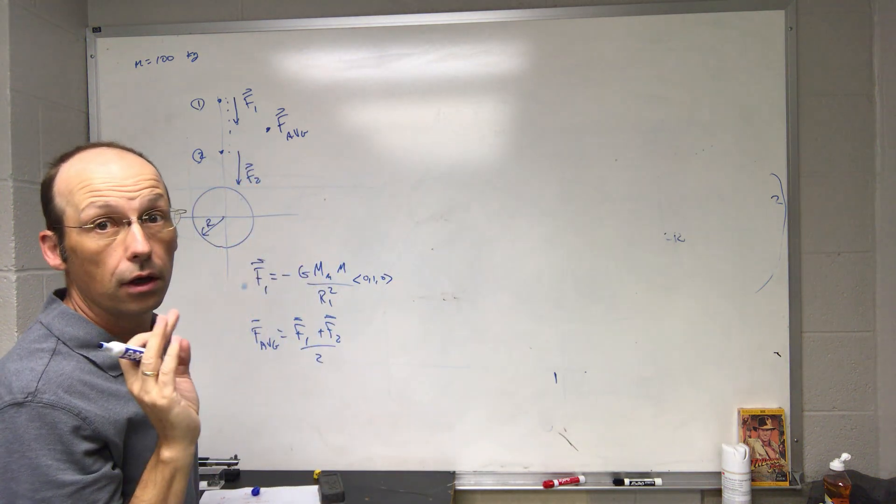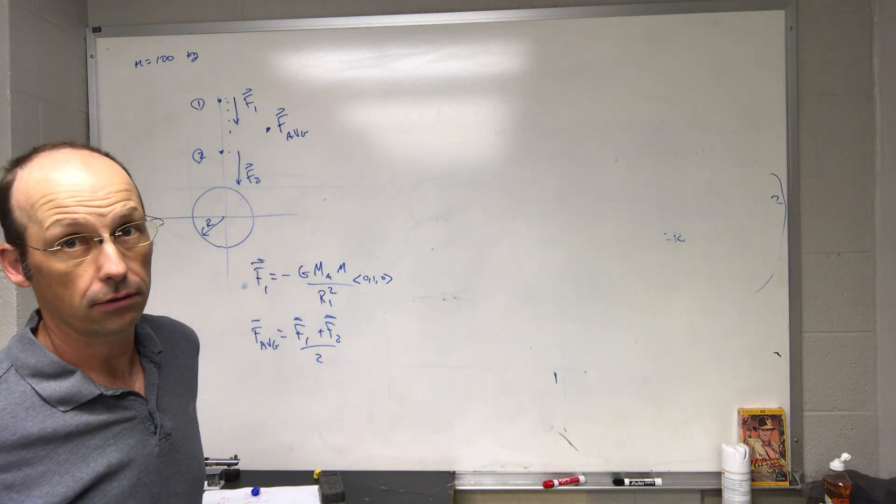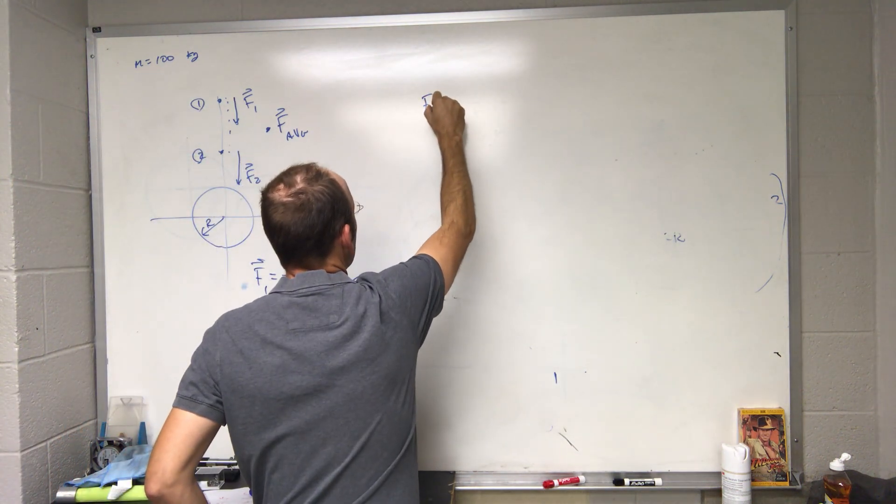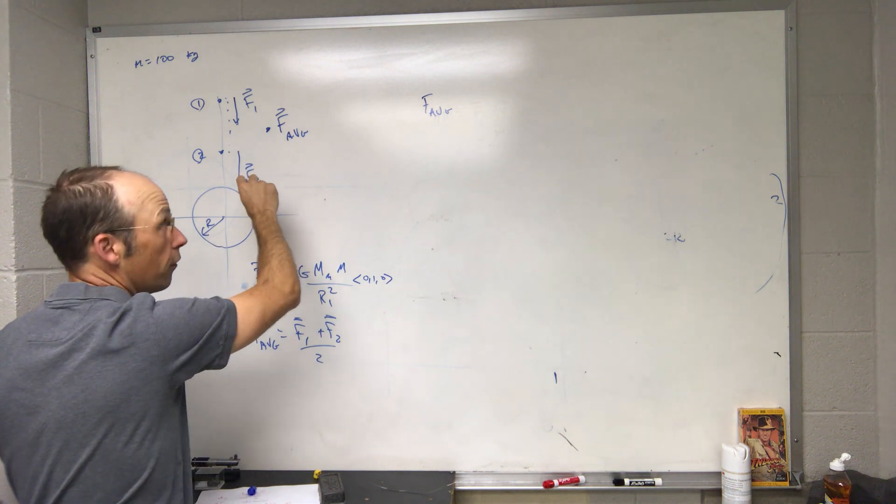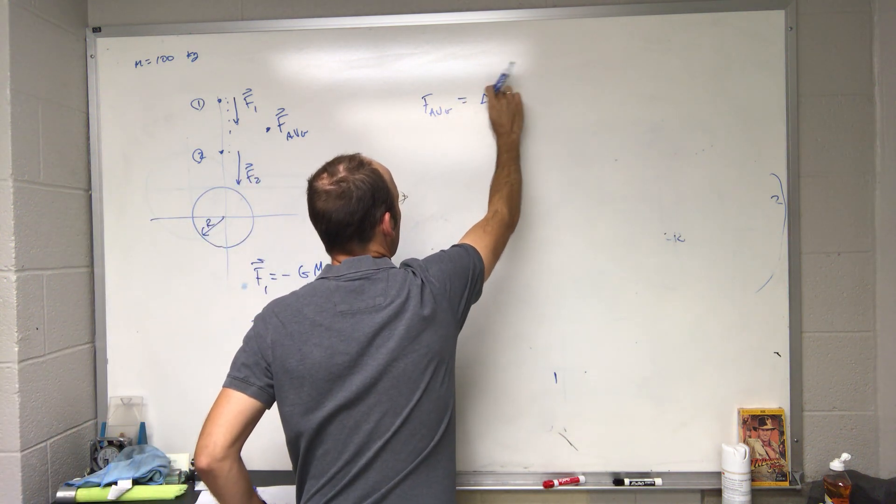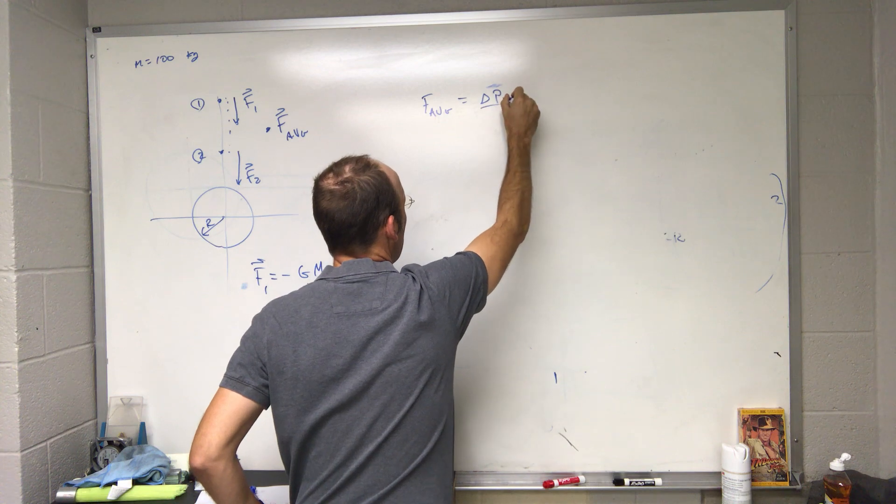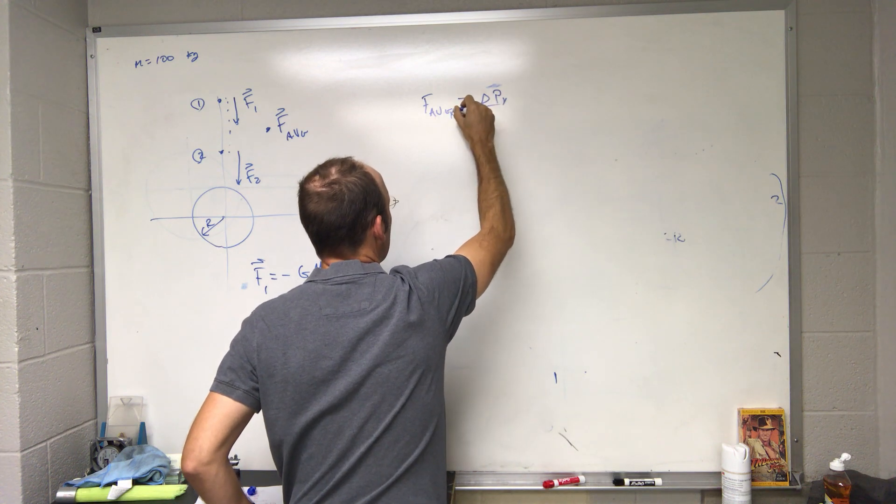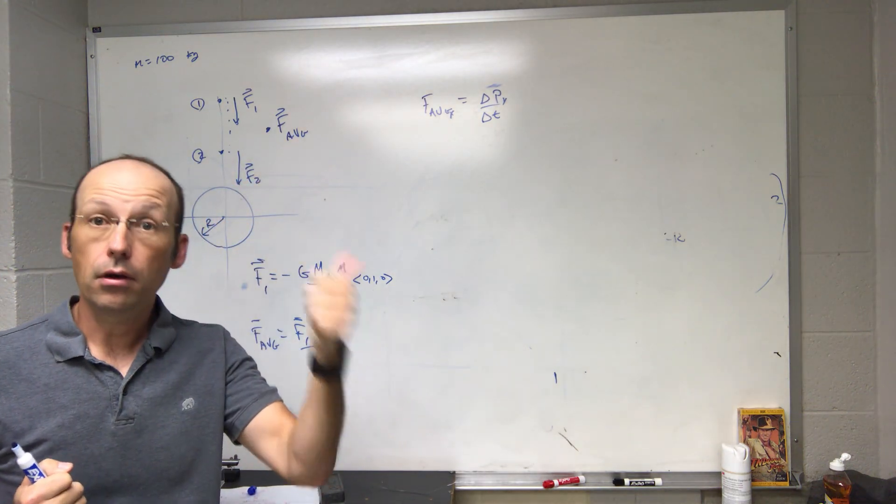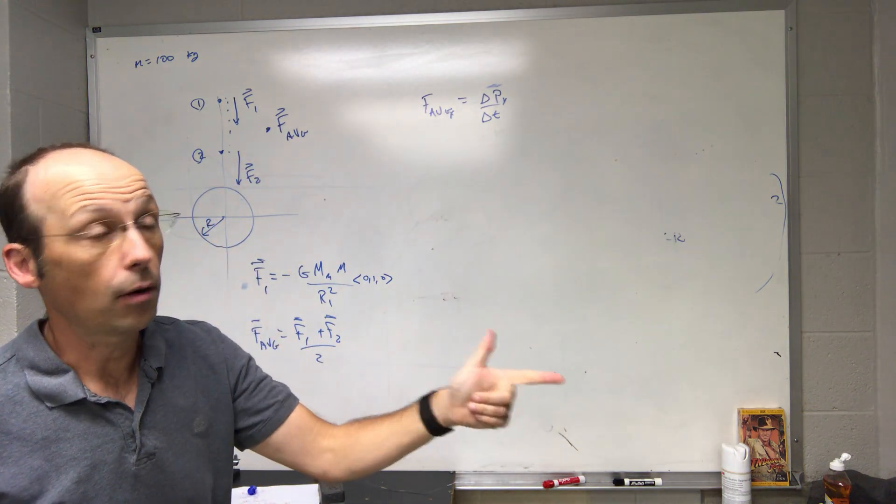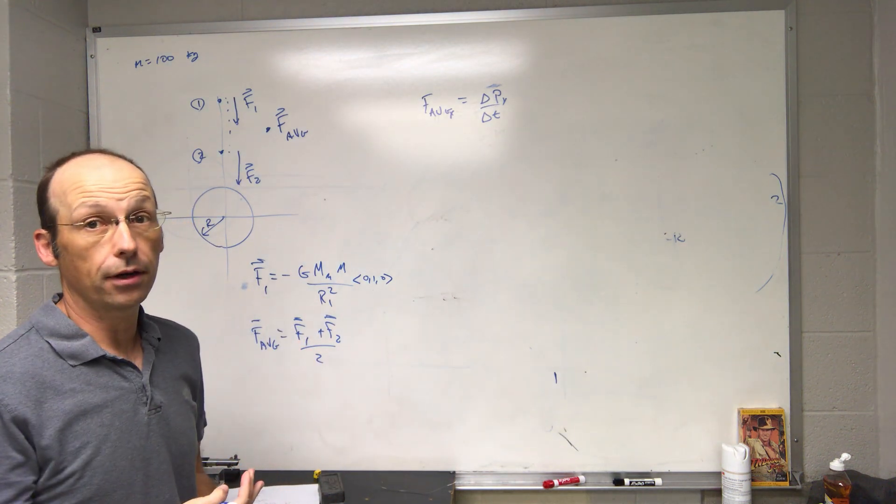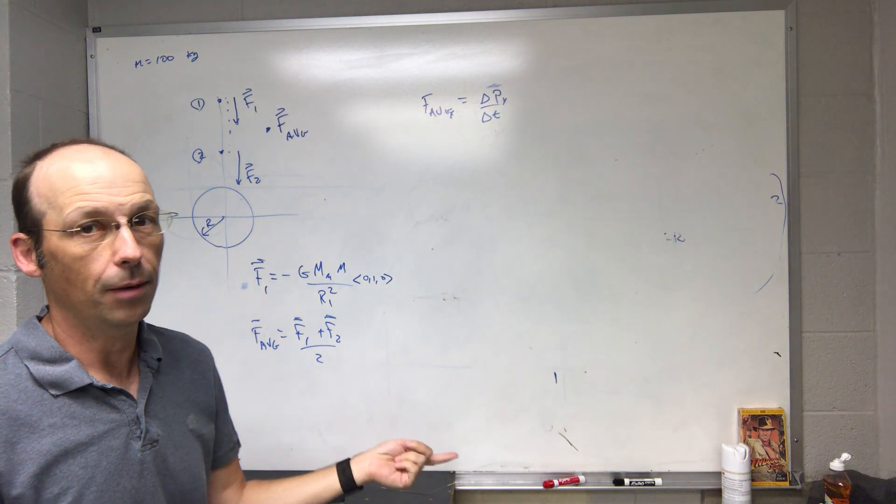I'm going to switch to the y, everything's in the y direction now so I can deal with scalars. I can start with F average, which is just F1 plus F2 over 2, is a change of momentum, not a vector. And this is all in the y direction, Py, F average y delta t. So I know my initial momentum is zero, I don't know my final momentum, I want that, I don't know the time. So it's really difficult to use momentum principle here in a straightforward way.